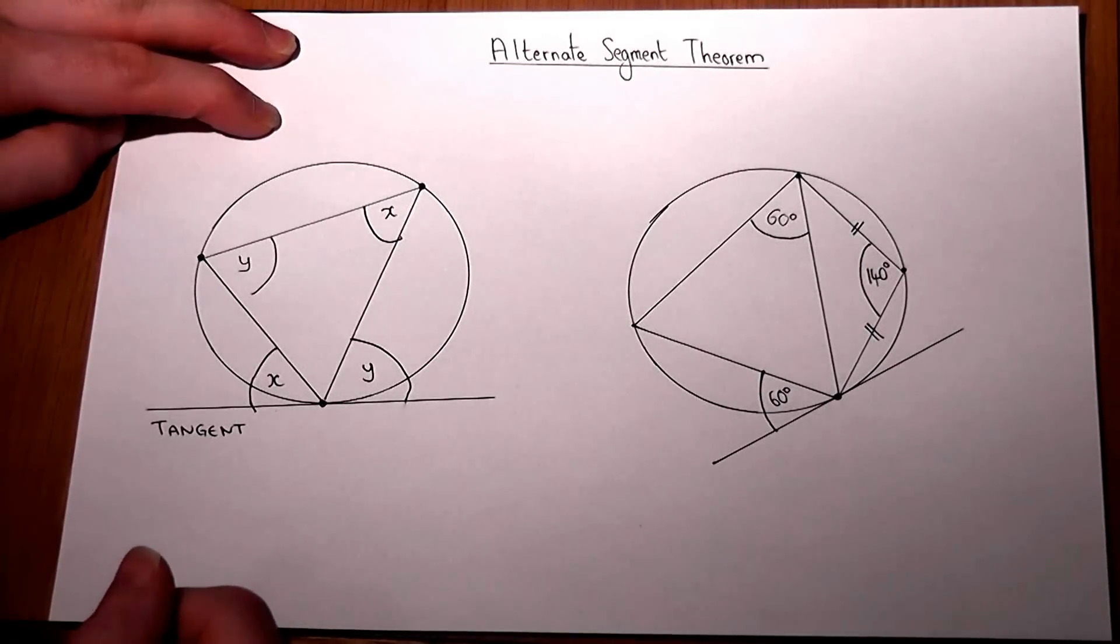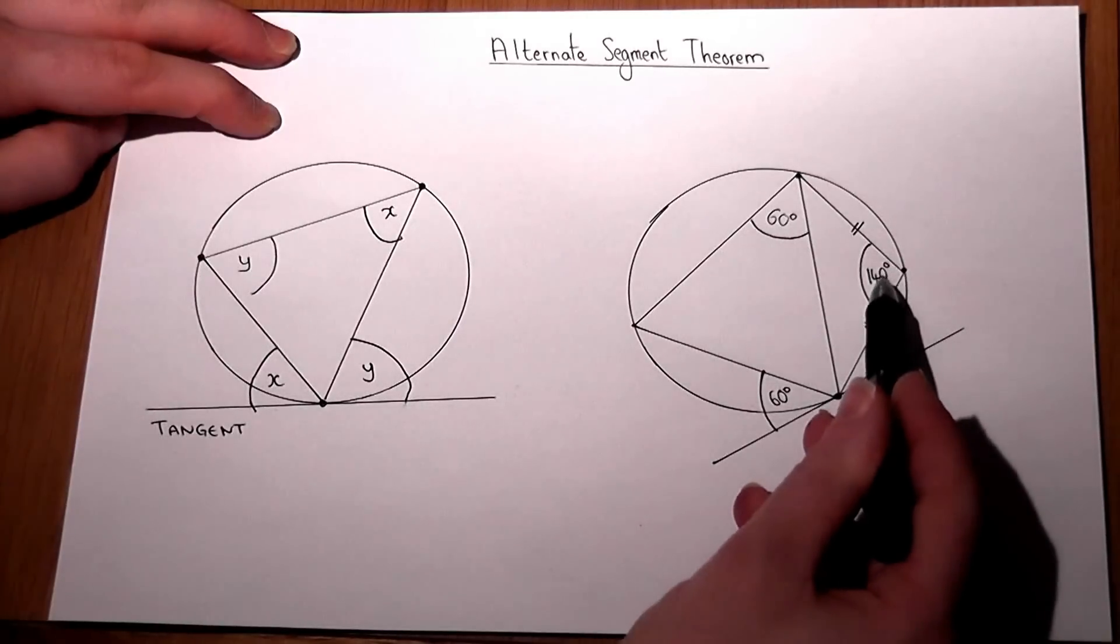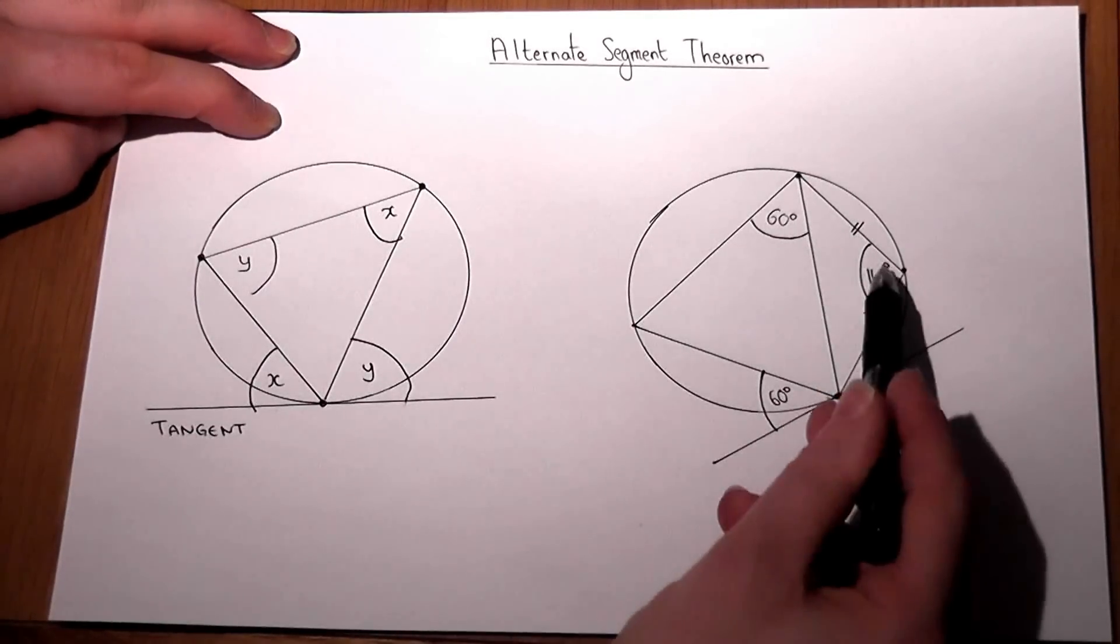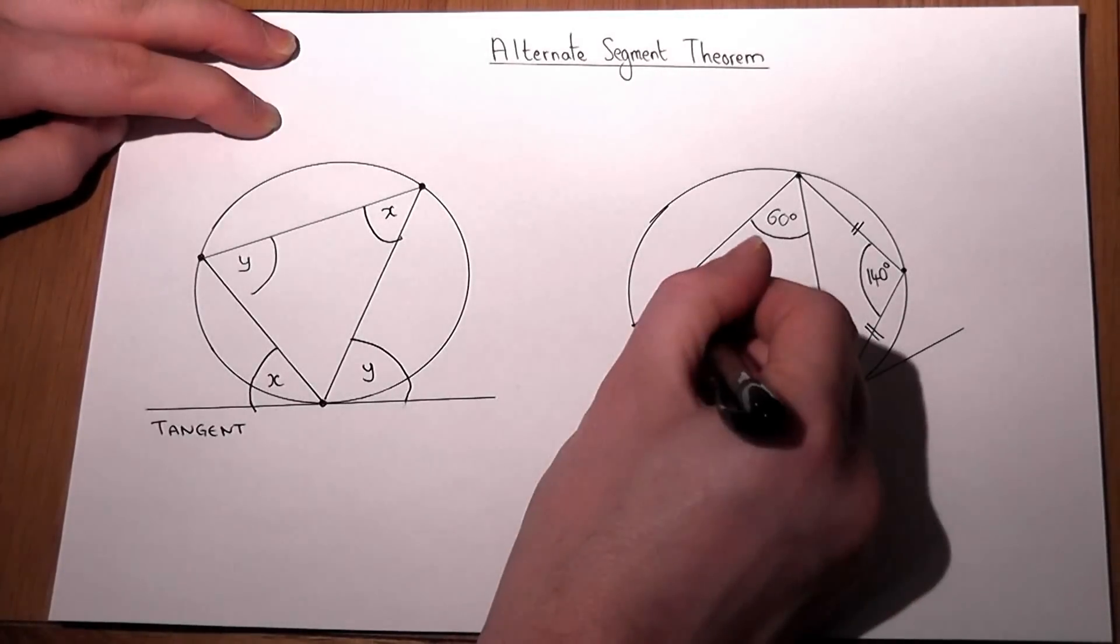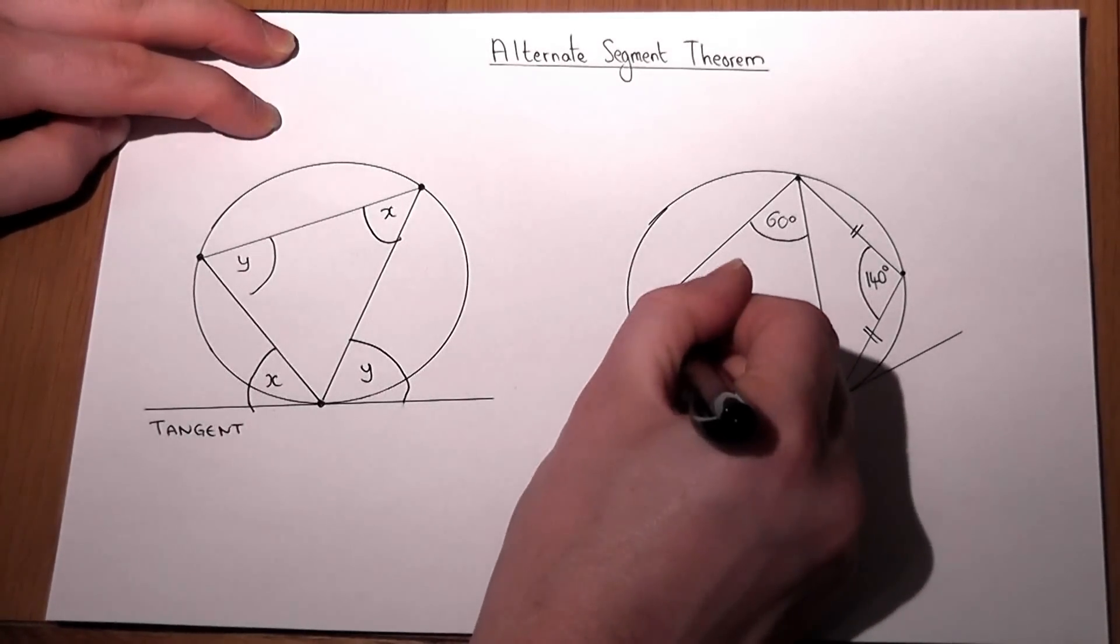So that's the alternate segment theorem applied. We also know that if that's 140, then opposite angles in a cyclic quadrilateral add to 180. So this angle here must be 40.